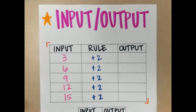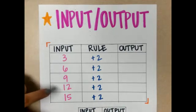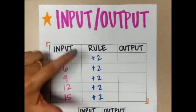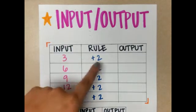Let's look at our numbers in input. I have 3, 6, 9, 12, 15. I have a rule here and it says plus 2.